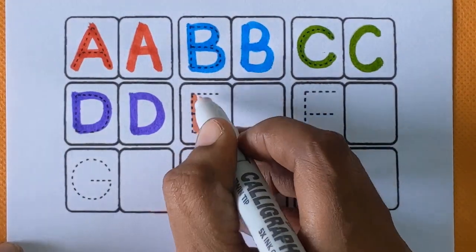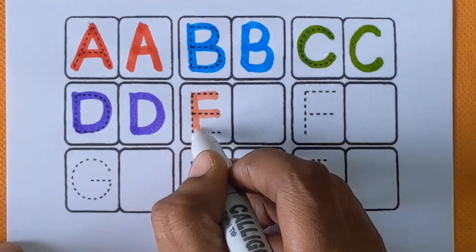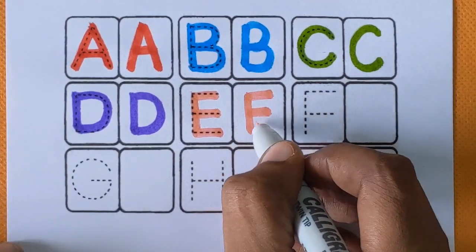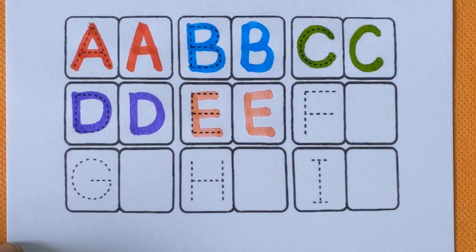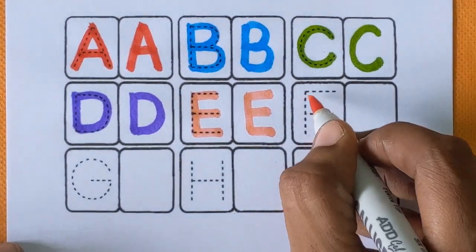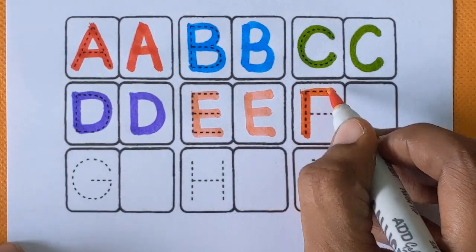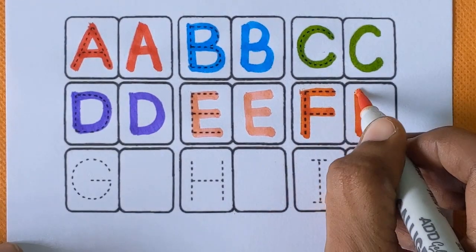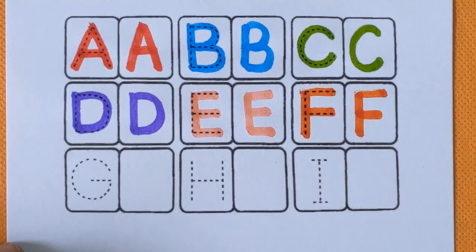Alphabet E, E for eagle and E for eggs, light pink color. F, F for father and F for flower, orange color.